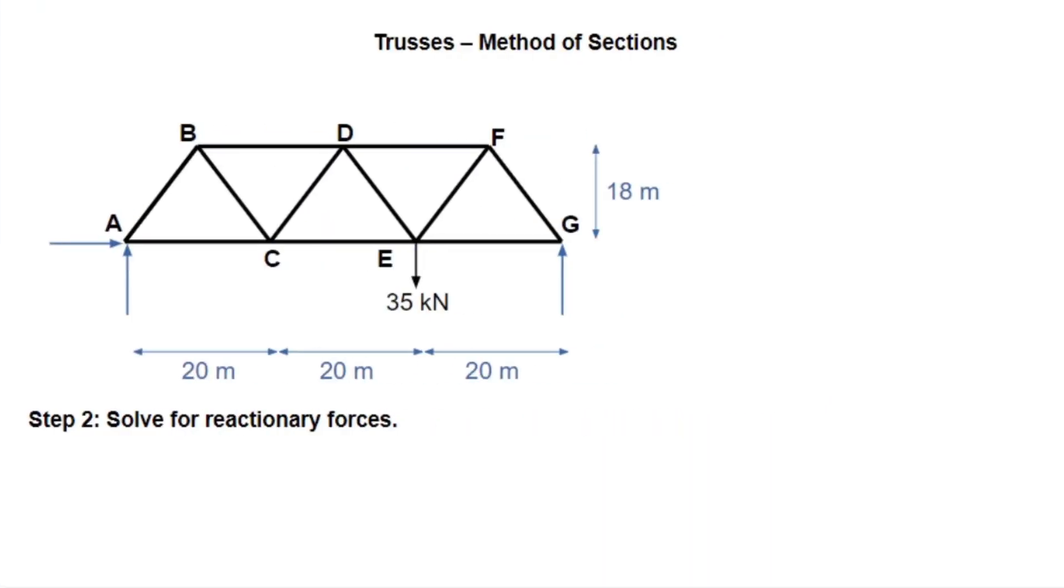Now we can replace our supports with reactionary forces, and you'll see we'll have this kind of set up, and we can give these labels to make it a little bit easier for ourselves. So we'll call this AX and AY and GY. And now we want to solve for these reactionary forces. And remember, at this point, we're only considering our external forces. So our support reactions and this 35 kN point load here, we're not worrying about those internal member forces.